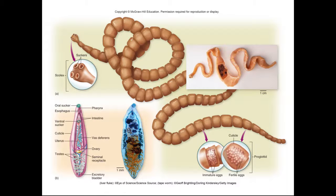Right here, because we can see that there's segmentation occurring, this is a big sign that we are looking at a flatworm. This is an adult stage of the flatworm, and as you can see, it's broken up into individual little segments. Each segment contains fertilized eggs, so as a segment breaks off, it's capable of repopulating another host.